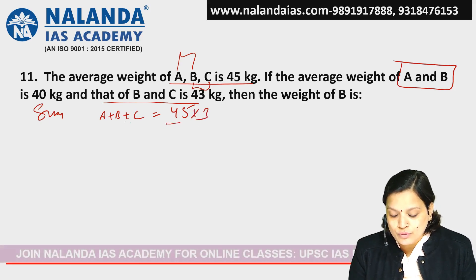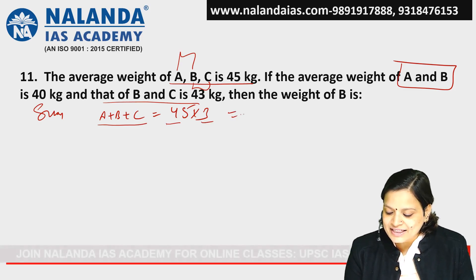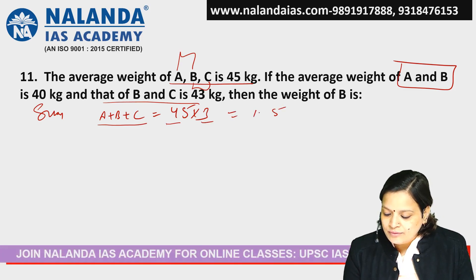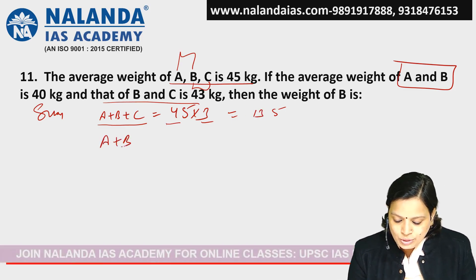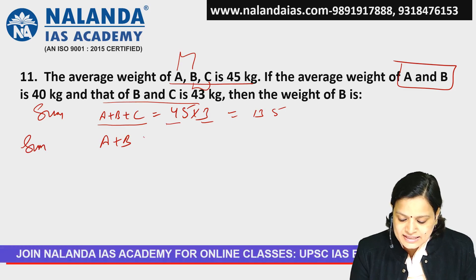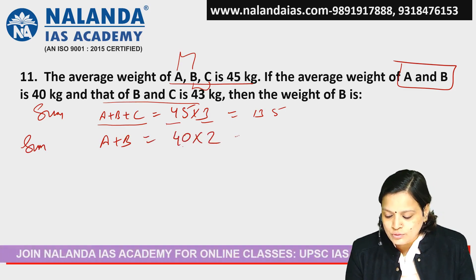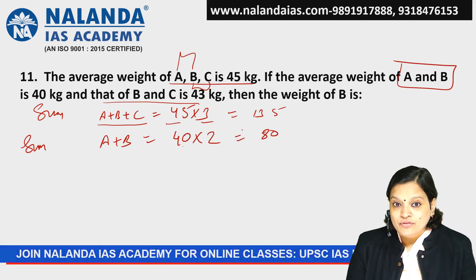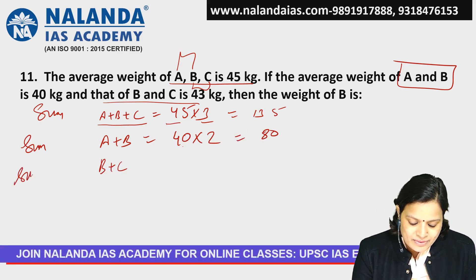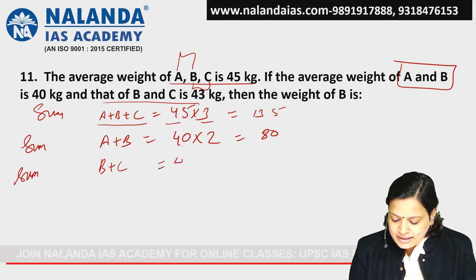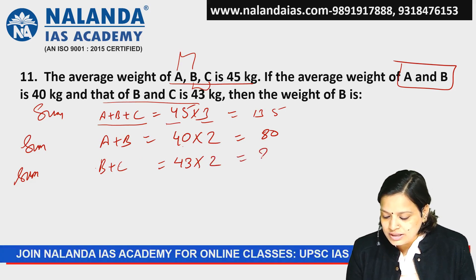The average of A and B — we multiply the average by the number of persons, which is 40 into 2, giving us A plus B equals 80. Then B plus C: the average of B and C is 43 into 2, which gives us B plus C equals 86.